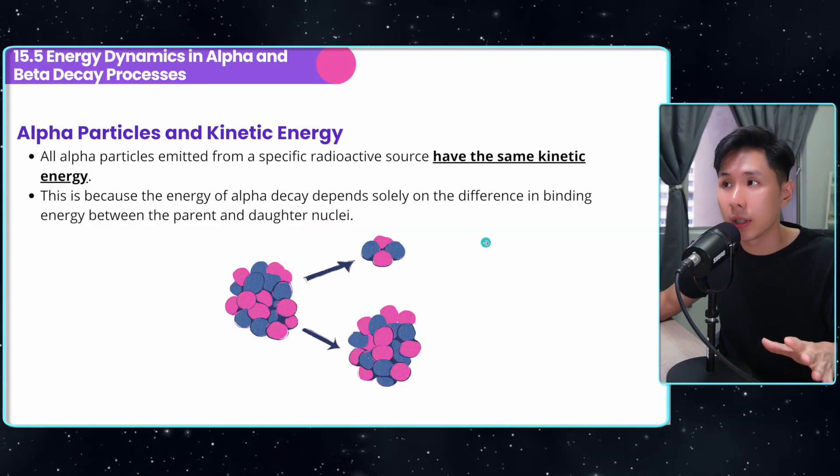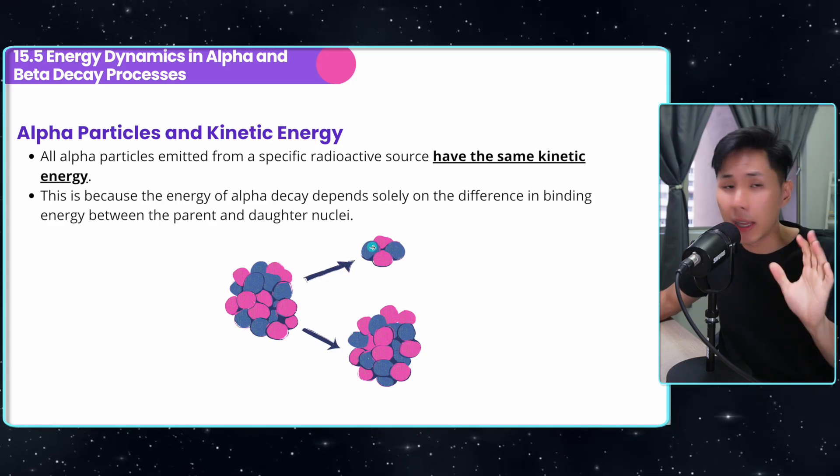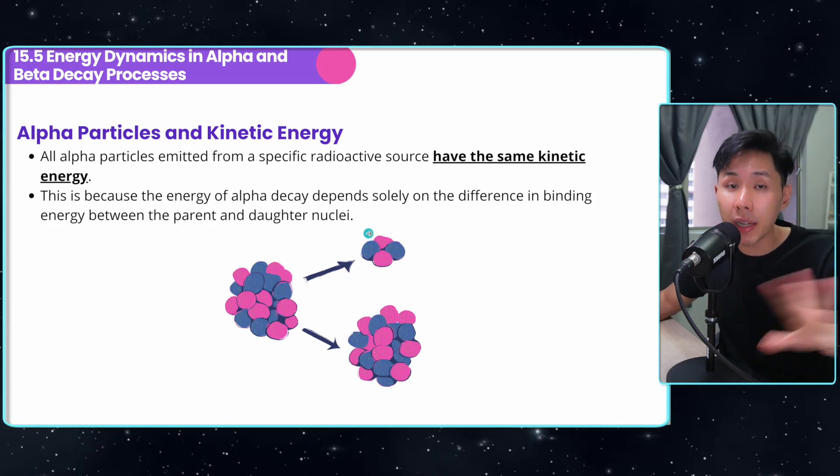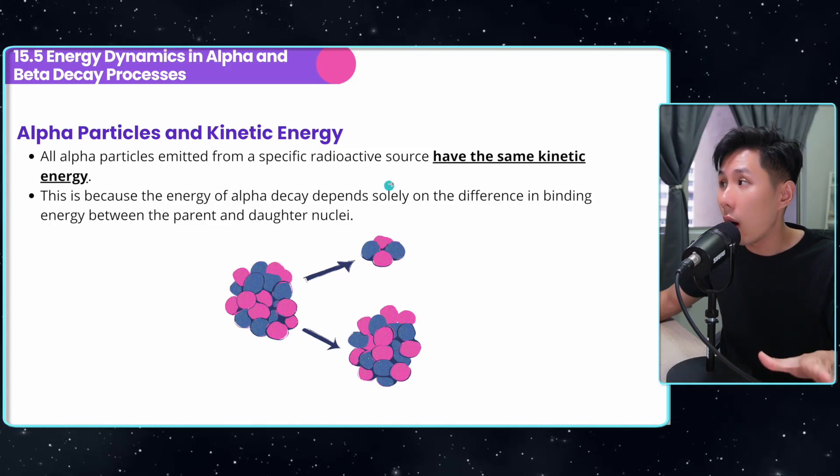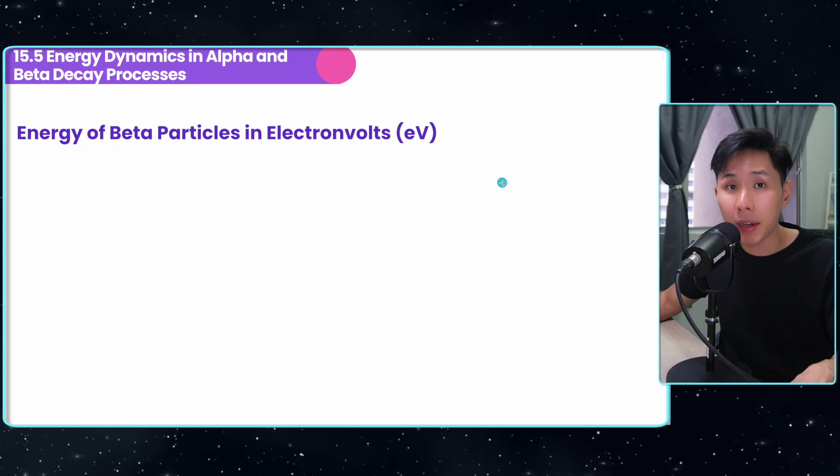Having talked about the different types of radiation, we will now talk about the energy involved in this radiation. As for alpha particles, if there are many alpha particles being emitted, they will all have the same kinetic energy, they'll move at the same speed. Whereas for beta particles, before you understand how it varies, let's understand a term called electron volt.